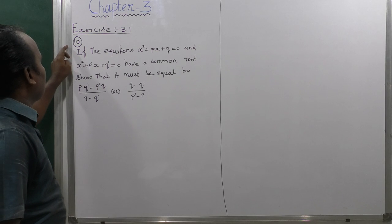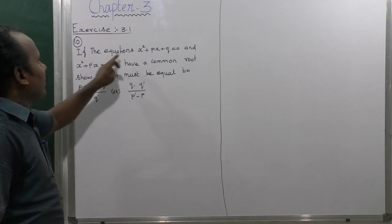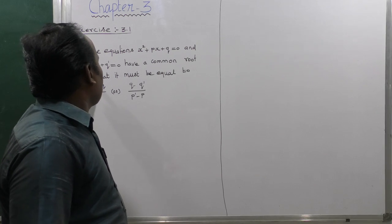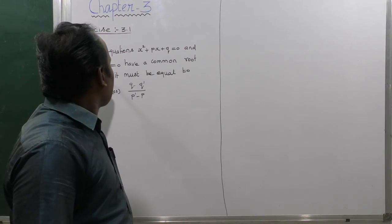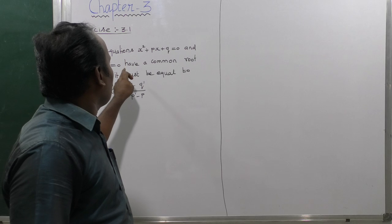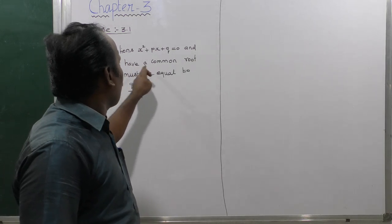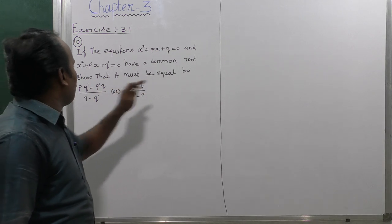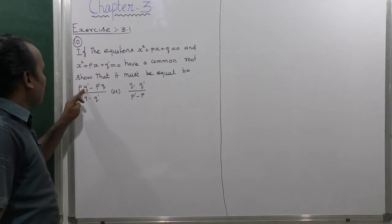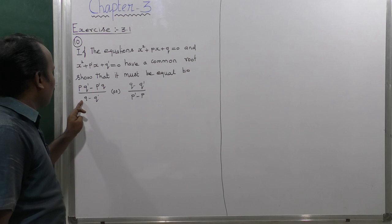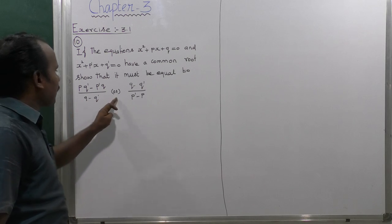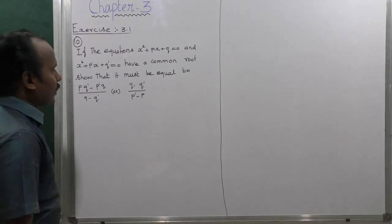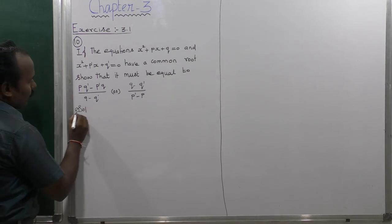If the equations x² + px + q = 0 and x² + p'x + q' = 0 have a common root, show that it must be equal to (pq' - p'q) / (q - q') multiplied by (q - q') / (p - p').